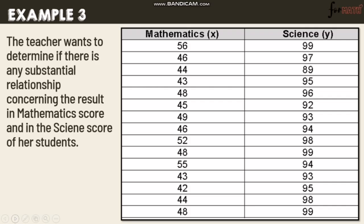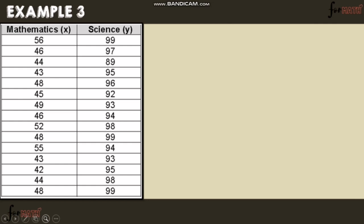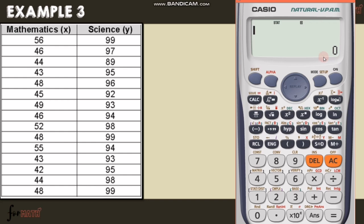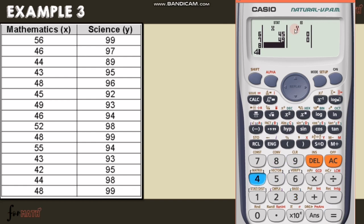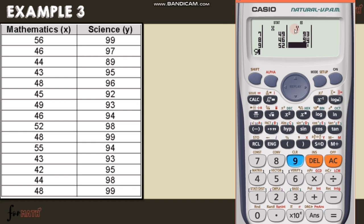Let's have another example. A teacher wants to determine if there is any substantial relationship between mathematics scores and science scores of her students. Mathematics is X and science is Y. Using the calculator in STAT mode, input the X values — 56, 46, 44, 43, 48, 45, 49, 46, 52, 48, 55, 43, 42, 44, 48 — and Y values — 99, 97, 89, 95, 96, 92, 93, 94, 98, 99, 94, 93, 95, 98, 99 — for 15 students.